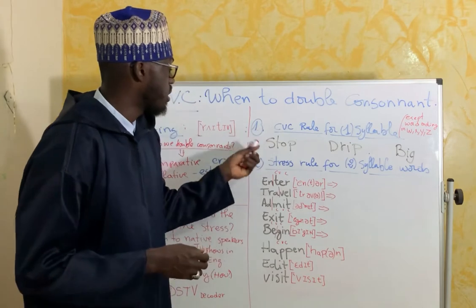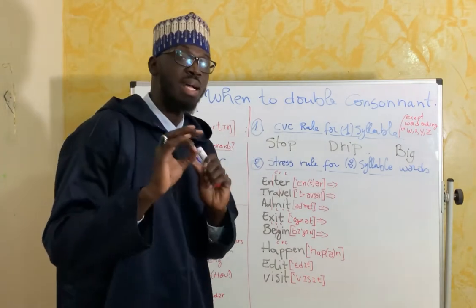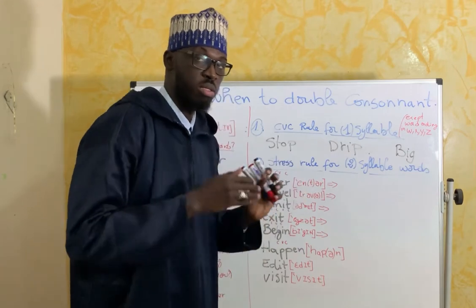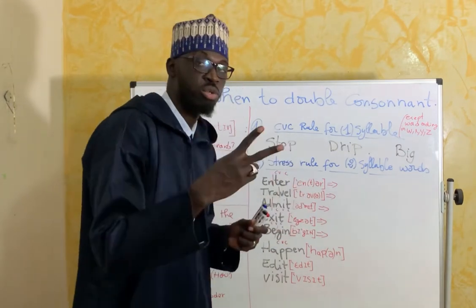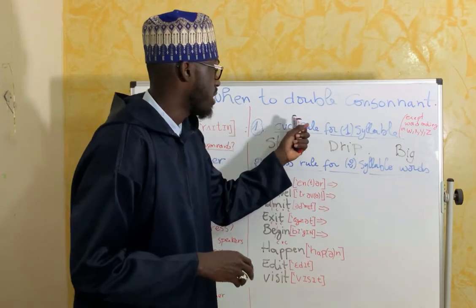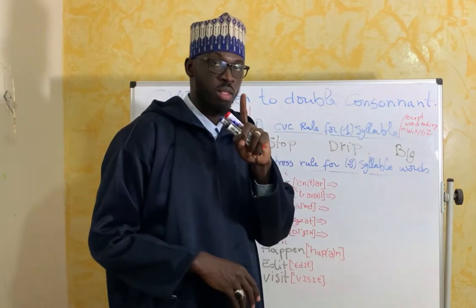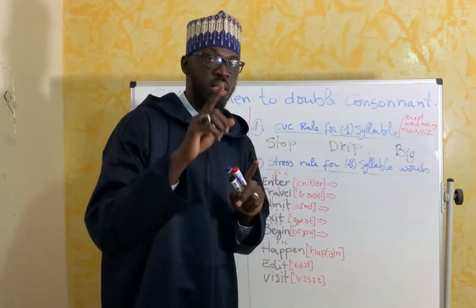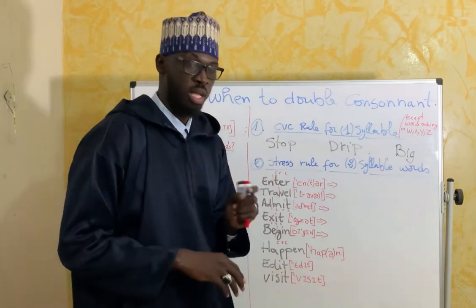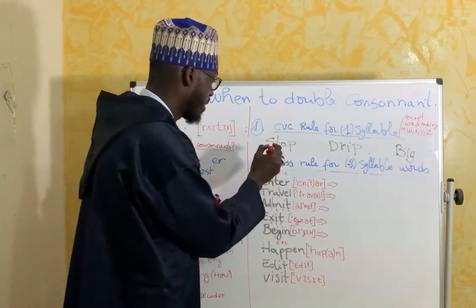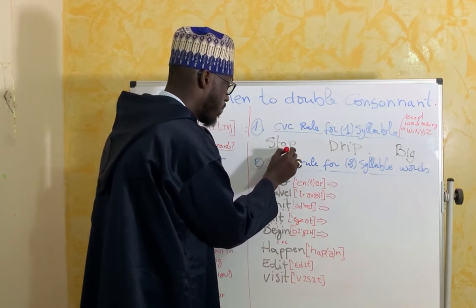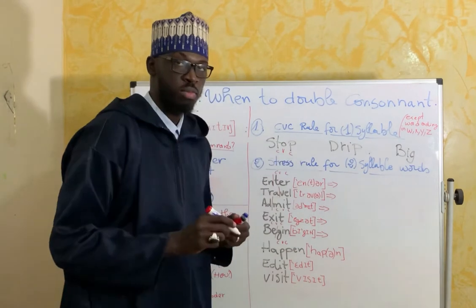We have two rules or guidelines today. The first is the CVC rule for one syllable — a word with just one syllable. Take 'stop': T is consonant, O is vowel, P is consonant.